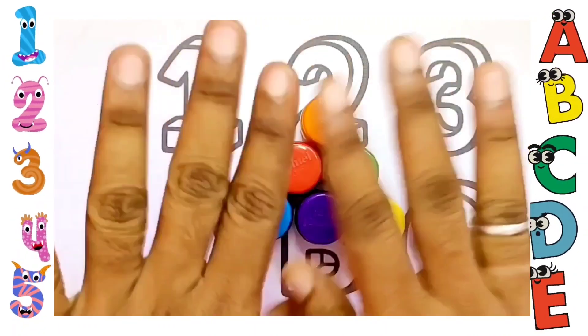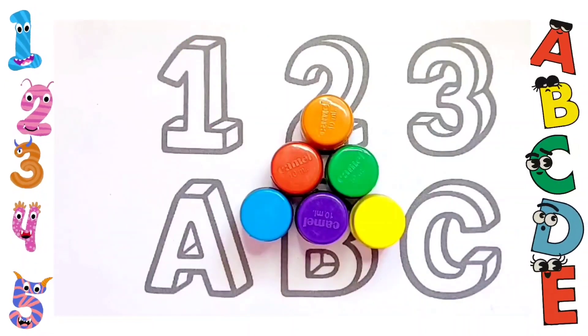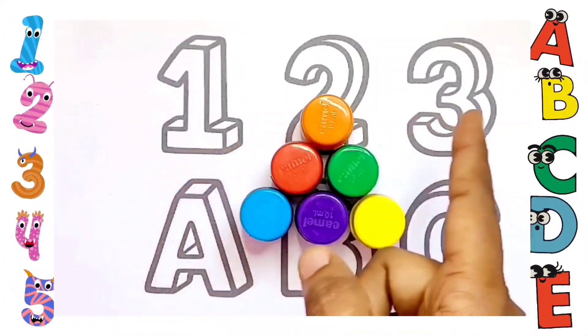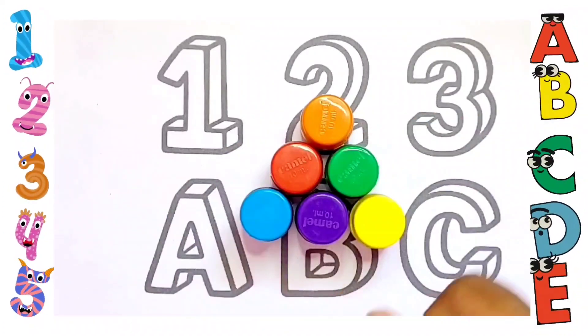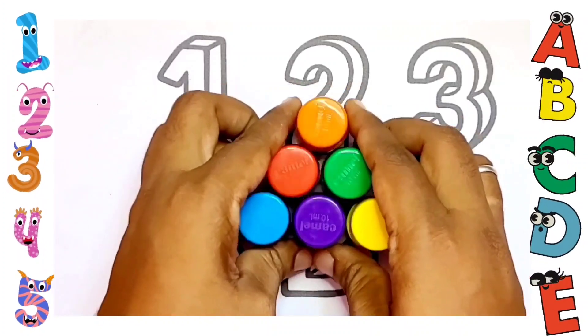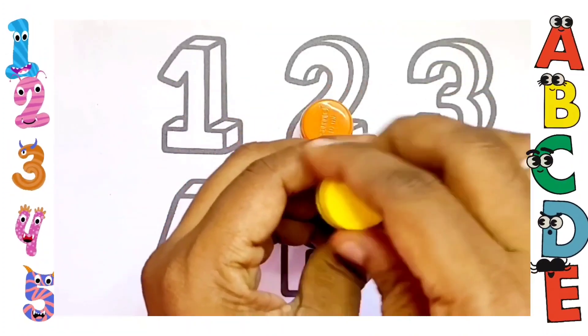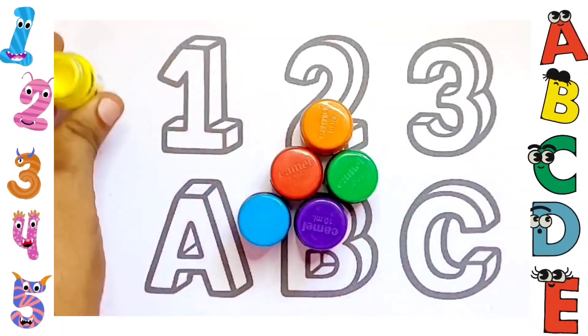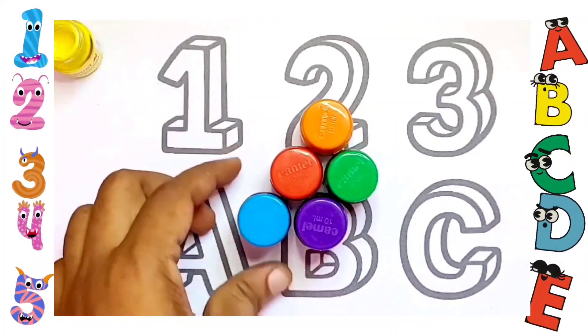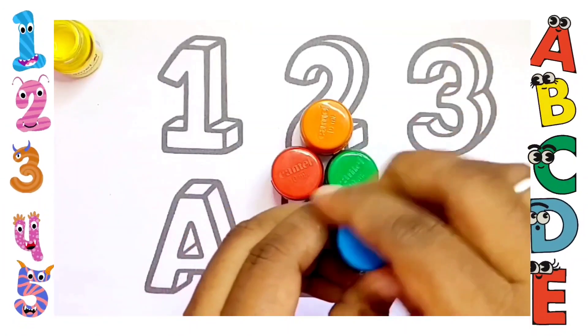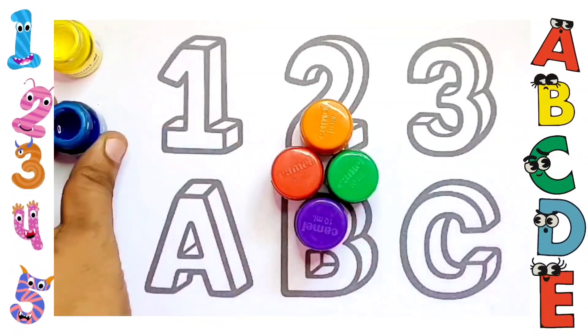Hello kids, welcome back to MG Colors. Today we are going to color 1, 2, 3 and A, B, C. Before that, let's see the colors. This is yellow color kids, this is yellow. Next, sky blue color, this is sky blue.